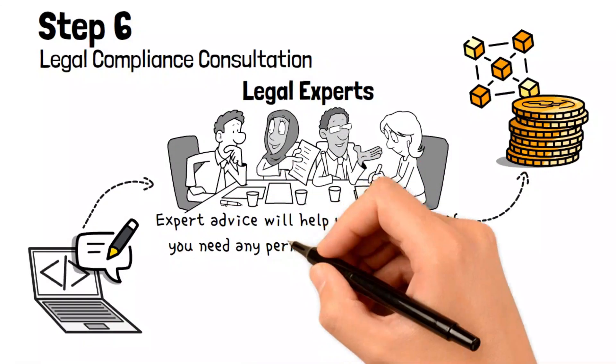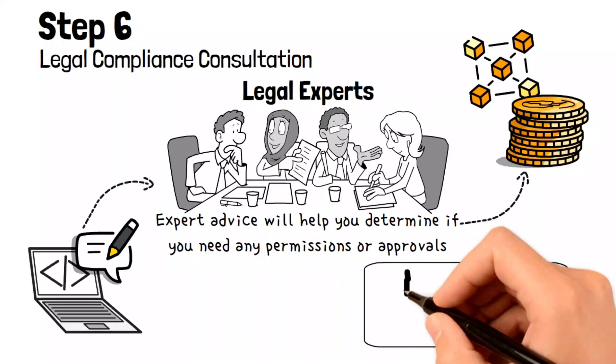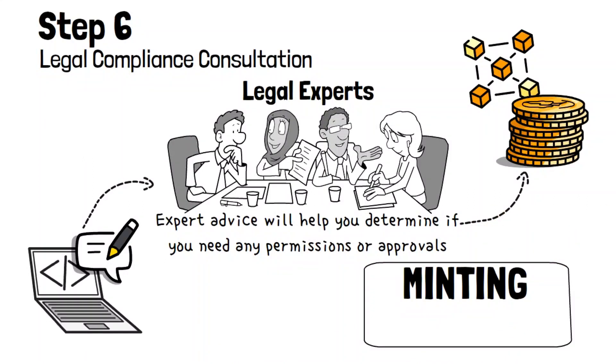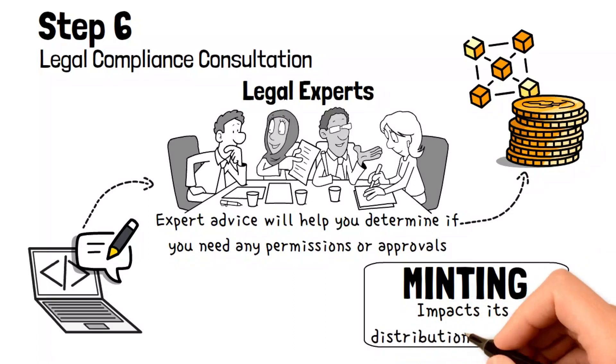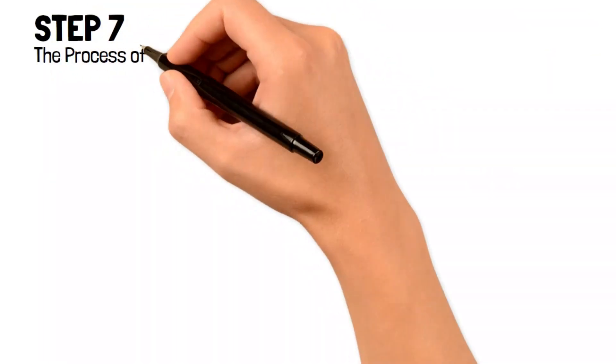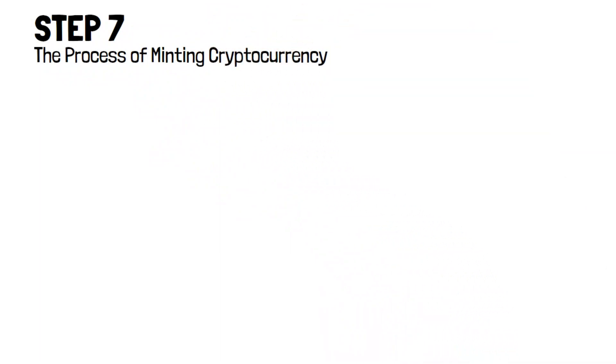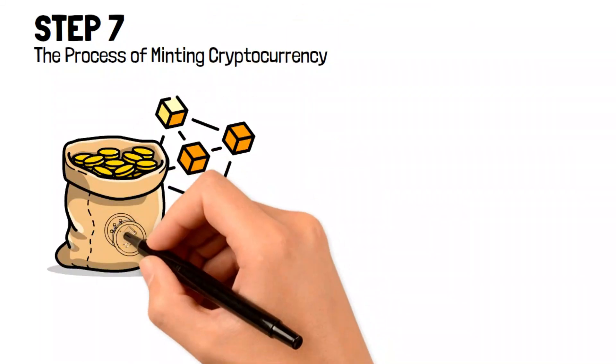Minting is crucial to your cryptocurrency's economic design, impacting its distribution and supply. Step Seven: The process of minting cryptocurrency. When it comes to creating your cryptocurrency, whether it's a token or a coin, there will be a point when you need to mint it. This means generating new cryptocurrency units according to your specific tokenomics plan.